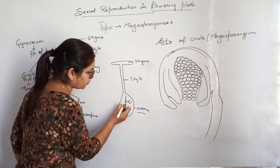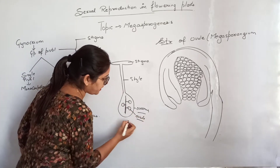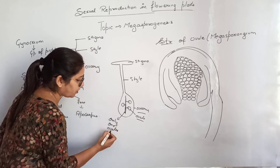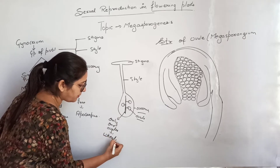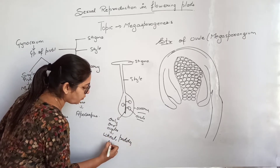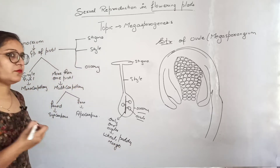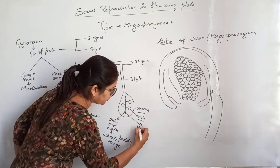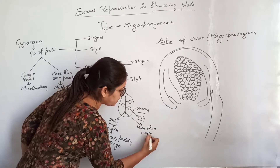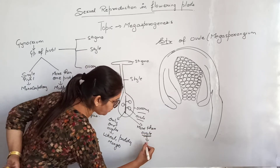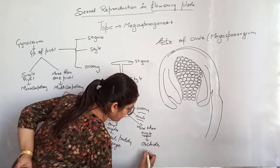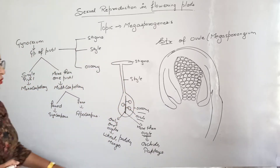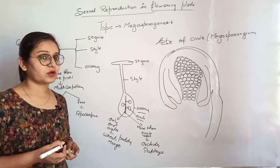In some plants, only one ovule is present in each ovary — for example, wheat, paddy, and mango — they have only one ovule that changes into a seed. Some plants have more than one ovule in each ovary, for example orchids, papaya, and watermelon, which is why we see a large number of seeds in them.